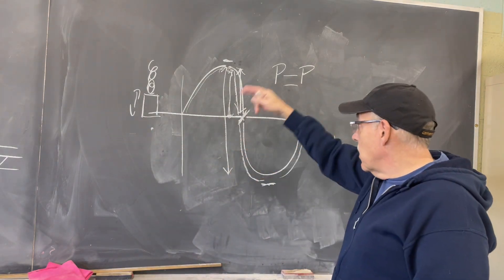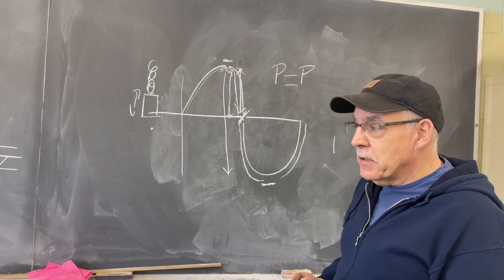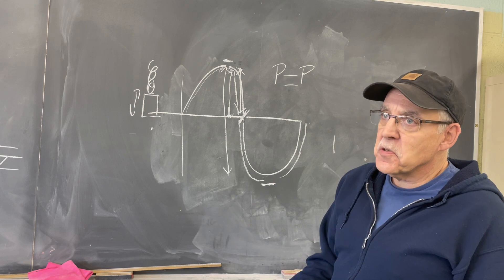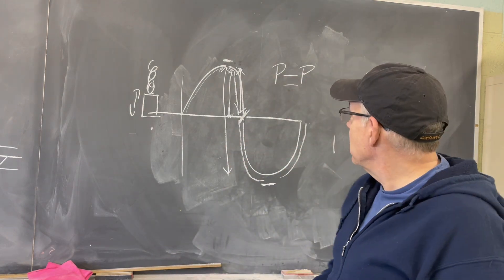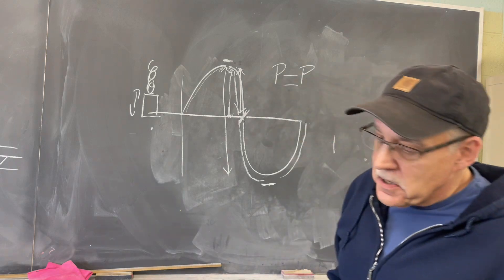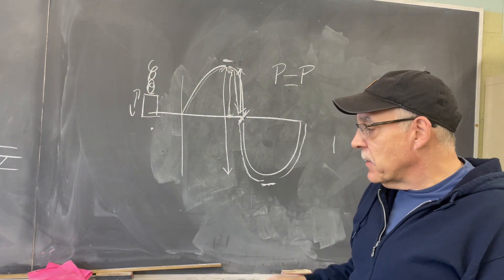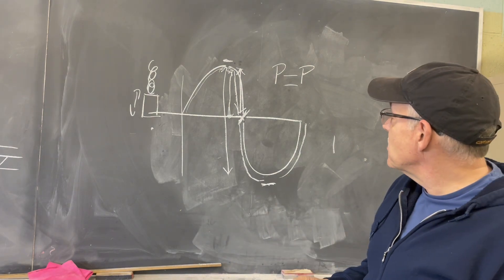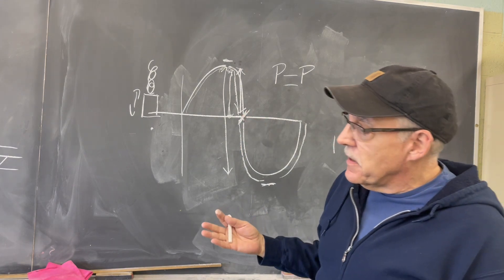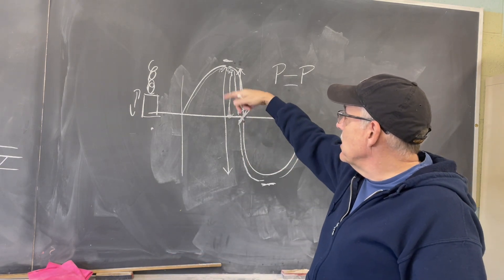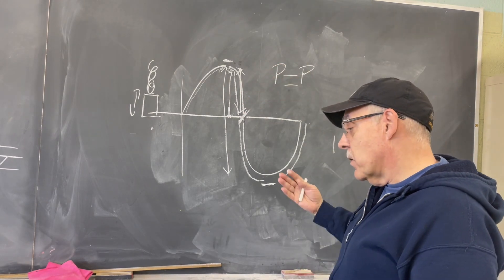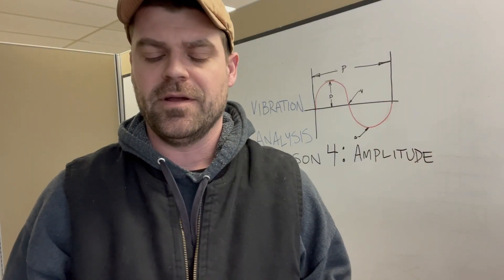To summarize: below 600 CPM, measure in displacement — units are mils or microns, always peak to peak, measuring stress. From 600 to 60,000 CPM, measure in velocity — units are inches per second or millimeters per second, measuring maximum speed, in peak. Above 60,000 CPM, measure in acceleration — always measured in g's, measuring how fast direction changes, in peak.